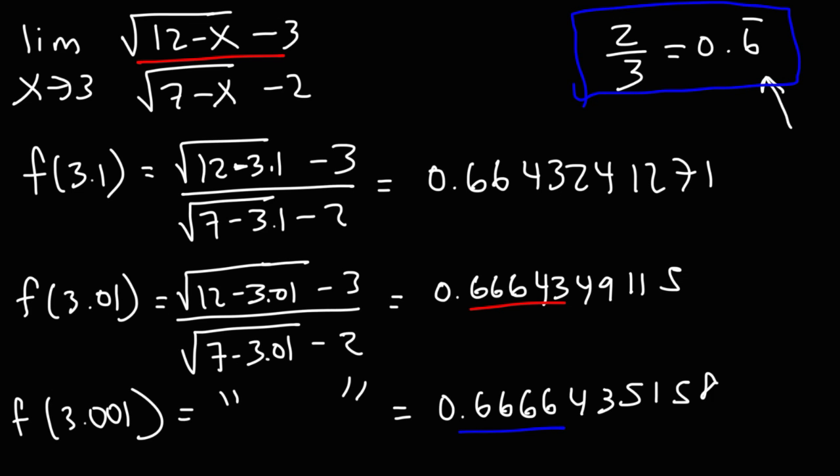So now you know how to evaluate a limit problem that has radicals in it. What you need to do is multiply the radical expression by its conjugate, simplify, and then evaluate the limit. That's it for this video — thanks for watching.